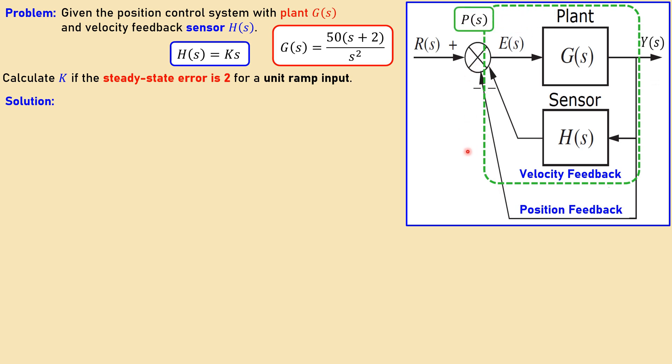But we need to reduce this part to one transfer function. And we have discussed this in the previous videos. In order to calculate or use formulas for the steady-state error, we need a unity gain feedback configuration. It is there, but we need to simplify these two blocks.